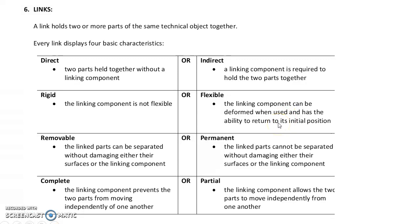A flexible link means the linking component can be deformed when used and has the ability to return to its initial position — for example, a spring or the suspension in a car, which absorbs shocks and returns to normal. Removable means the linking parts can be separated without damaging either their surfaces or the linking component — for example, a screw can be unscrewed and screwed back without damaging the two parts.